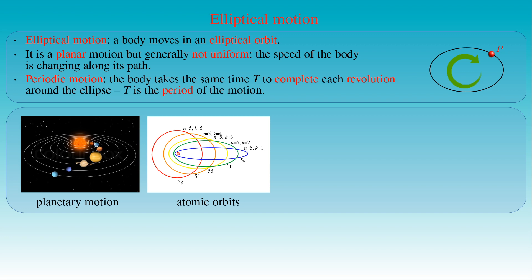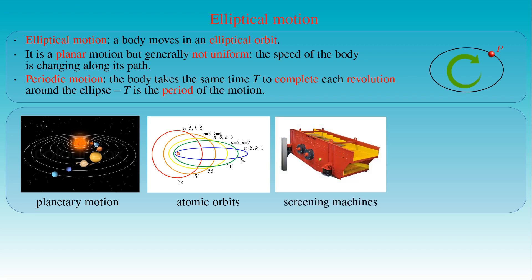We can also find examples for elliptic motion in industrial technologies. This type of motion is proven to be useful in the screening process of particle flow. Elliptical motion vibrating screens combine the advantages of linear and circular motion screens. Elliptical motion screening machines are driven by two centric main shafts, which generate a swing diameter as in a free-running drive.